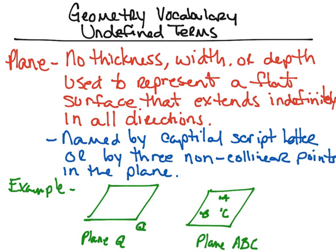The last undefined term is a plane. A plane has no thickness, no width, and no depth. We use this to represent a flat surface that extends indefinitely in all directions. When naming a plane, we use either a capital script letter, or we can use three non-collinear points that are on the plane.